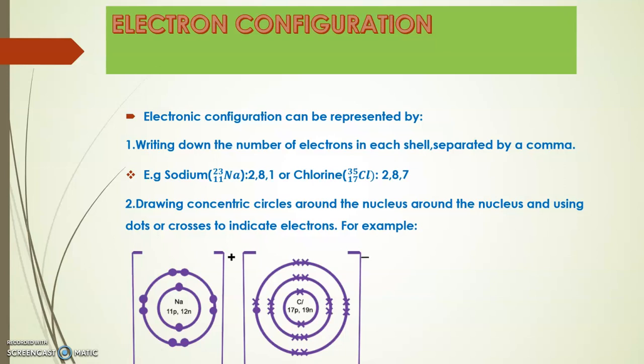Let's look at electron configuration. This is how the electrons are actually configured or arranged in the shells. We can show the electronic configuration by writing the number of electrons in each shell. So let's say we have sodium, with the mass number 23 and proton number 11. What I want you to remember is that the proton number denotes the number of protons, and the number of protons always matches with the number of electrons. So if we know the proton number, we have also known the number of electrons. So if there are 11 electrons, let me draw this so that you see how this is done.